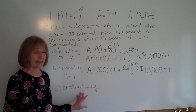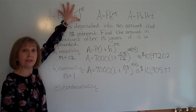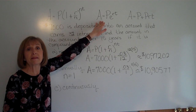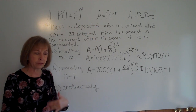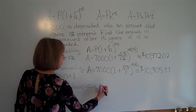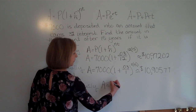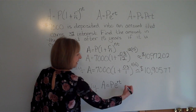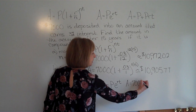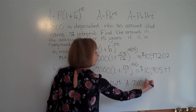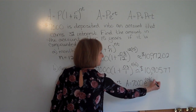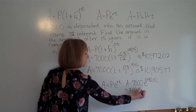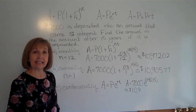For continuous compounding, we don't use the formula with a specific number of compounding periods. Instead, we use the formula that is the limit as the number of compounding periods goes to infinity: A equals P times E to the RT. So that's 7,000 times E to the power of .03 times 15, which gives approximately $10,978.19.